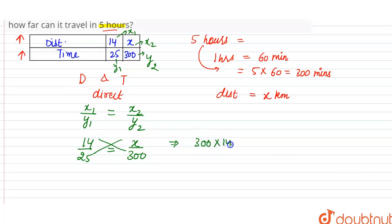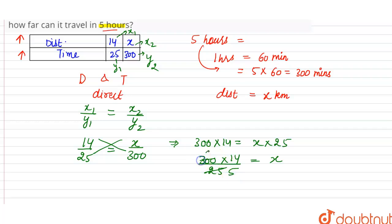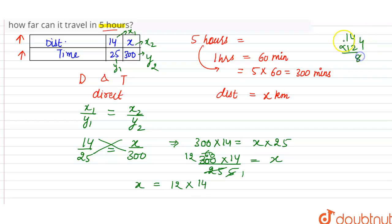Now we do cross multiplication: 300 into 14 is equal to x into 25. Transferring 25 to the left-hand side, x equals 300 into 14 divided by 25, which simplifies to 12 into 14. Calculating: 12 into 4 is 48, 12 into 1 is 12, giving 168. So 168 kilometers can be covered in 5 hours.